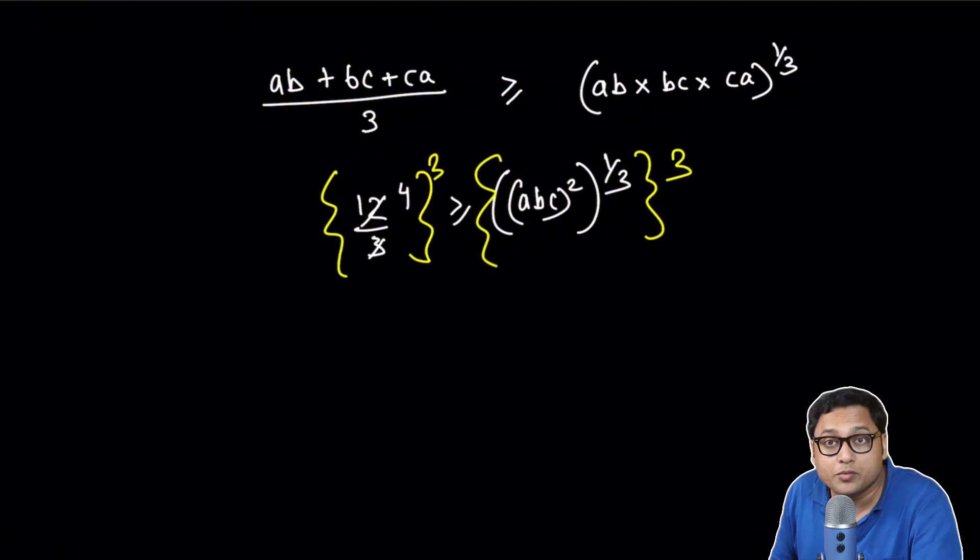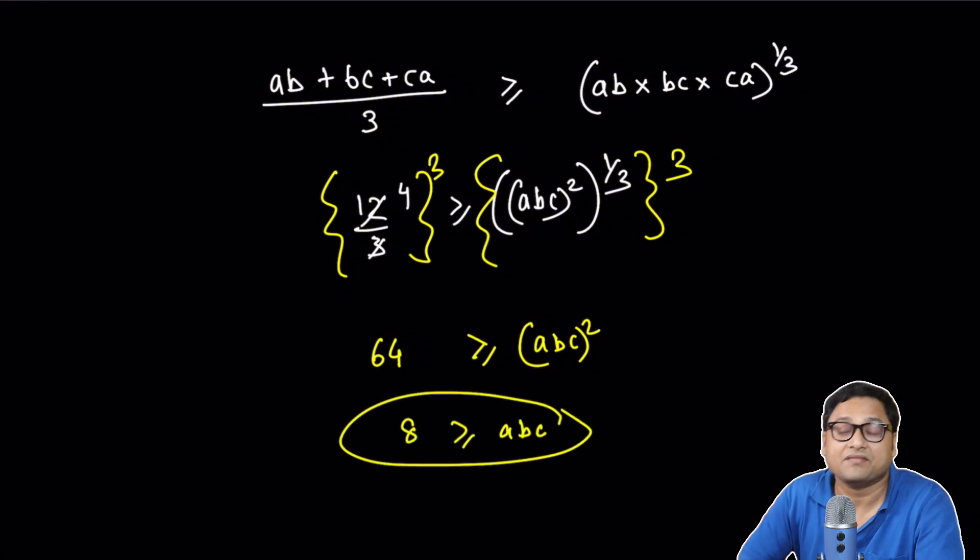So if I do that, I have 4 cubed, which is 64, is greater than or equal to ABC whole square. So 8 is greater than or equals to ABC. That is the final answer.